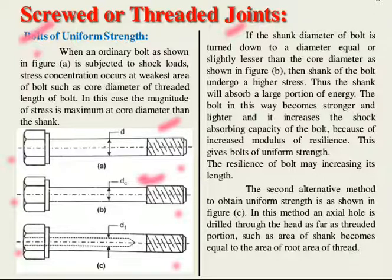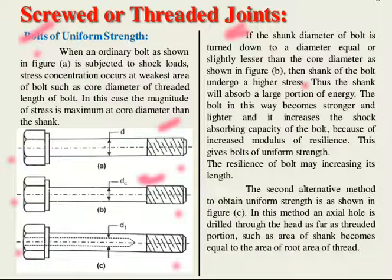In the second case, if the shank diameter is made equal to the core diameter, then the strength develops uniformly. The shank will absorb a larger portion of energy. The bolt in this way becomes stronger and lighter, and it increases the shock absorbing capacity of the bolt because of the increased modulus of resilience.